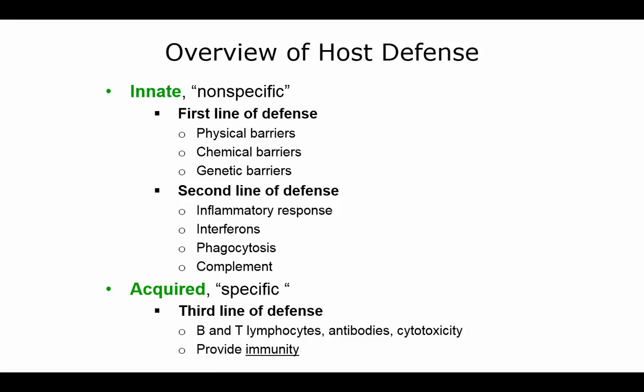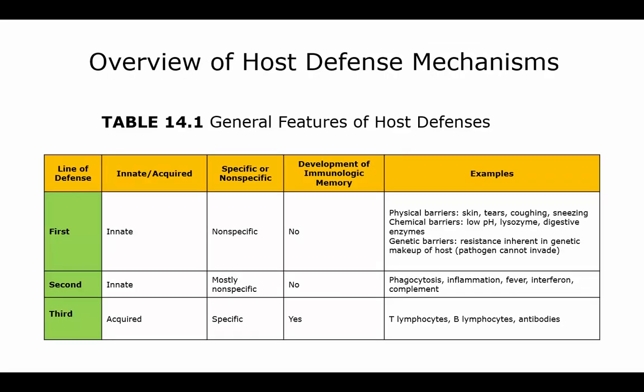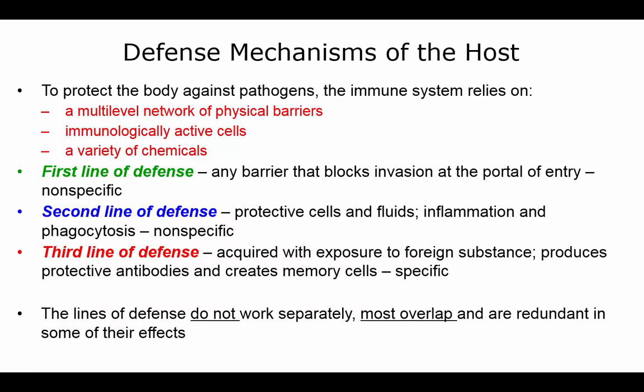The acquired or specific defenses make up the third line of defense. This involves your white blood cells — the B lymphocytes and T lymphocytes — and the antibodies, and this is what provides your immunity. To summarize the overview: the first line is innate physical, chemical, and genetic barriers; the second is also innate, involving phagocytosis, inflammation, and fever; the third is acquired, involving T and B lymphocytes and the antibodies you make in response to exposure to microbes.